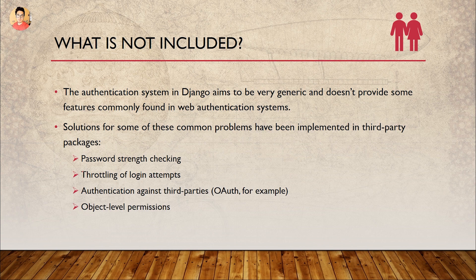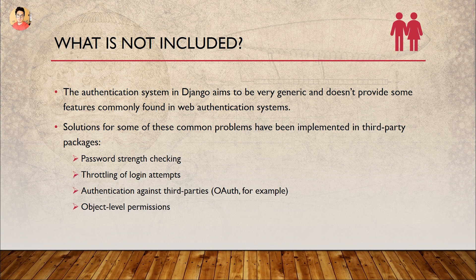Now let's talk about what's NOT included, because that's equally important. The authentication system in Django aims to be very generic. As I told you, shipping address is not there because it's not generic — it's specific to eCommerce websites. But if you want to add authentication to your to-do list, you'll want a lightweight and easy-to-use generic authentication system. Django is generic, and it doesn't provide some features commonly found in web authentication systems.